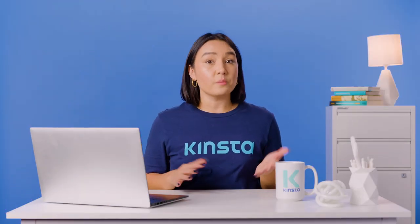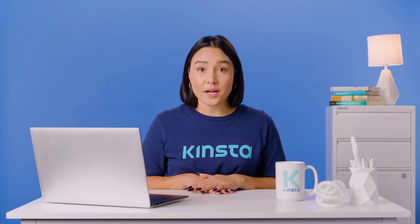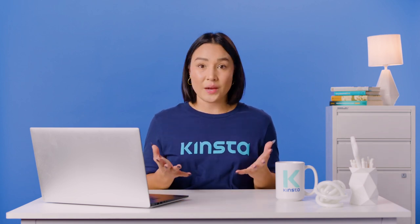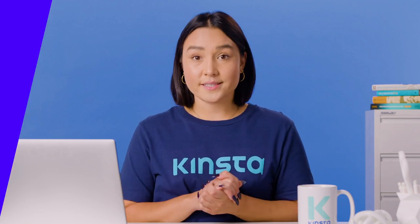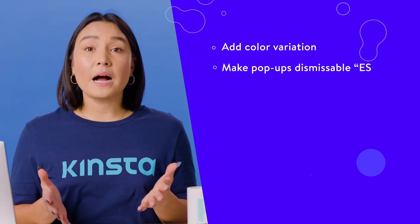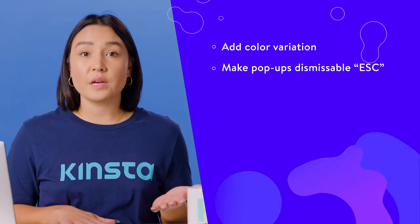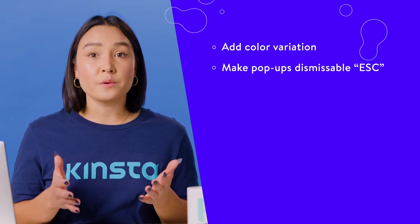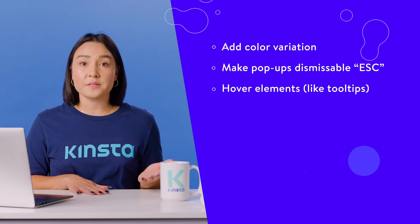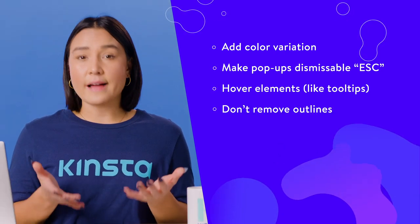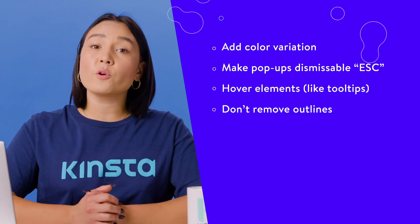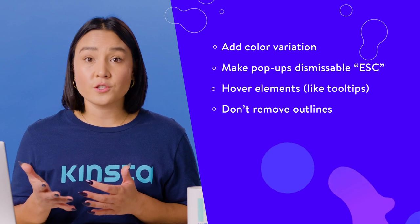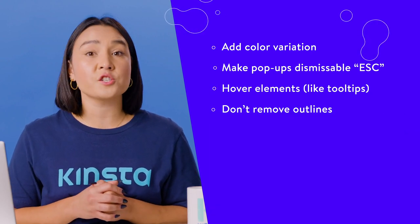Everyone should be making their websites accessible. This goes for your approach to CSS as well. Your goal should be to make your website usable for as many people as possible. You can make your CSS accessible in a number of ways: add color variation to links to make them stand out; make pop-ups dismissible by pressing the Escape key — those who use screen readers or magnification will often not be able to see the X on the screen to dismiss a pop-up; hover elements like tooltips should be triggered by the Tab key as well as a mouse hover; and don't remove outlines — browsers display an outline around elements that the keyboard is currently focused on automatically.